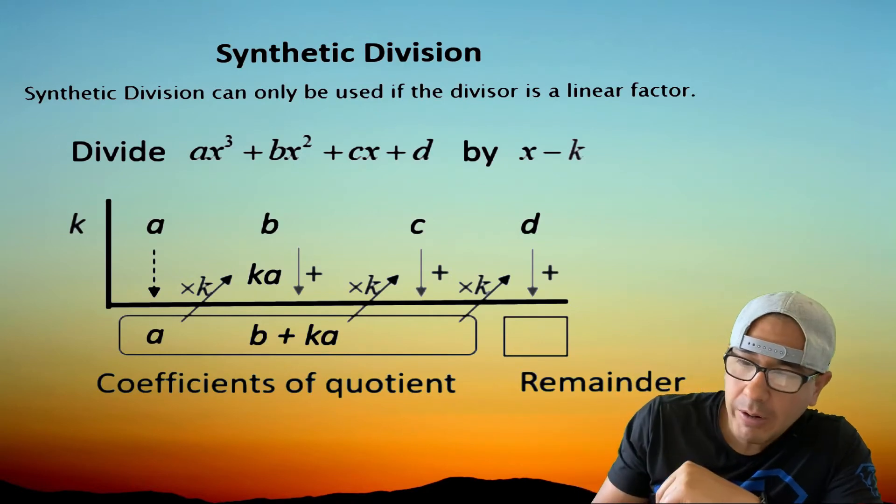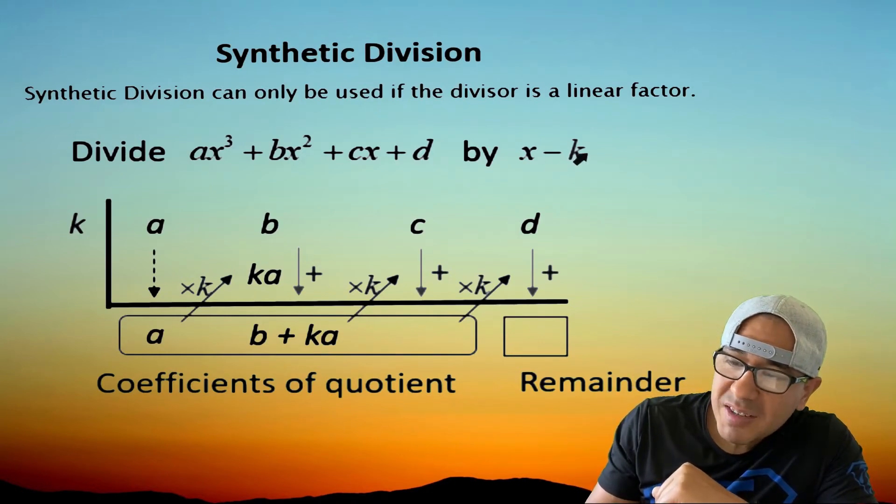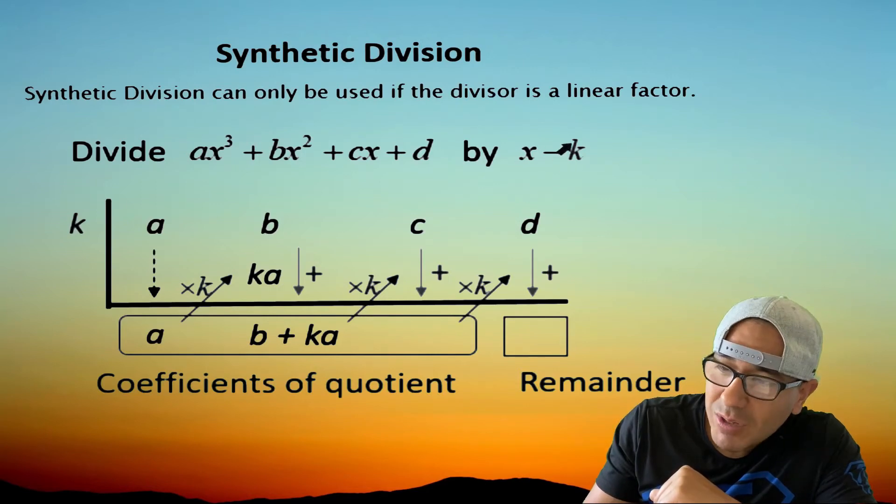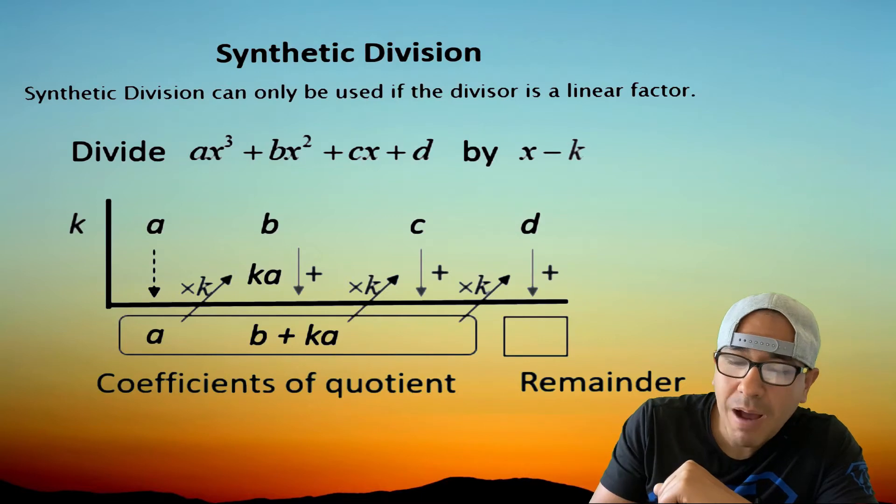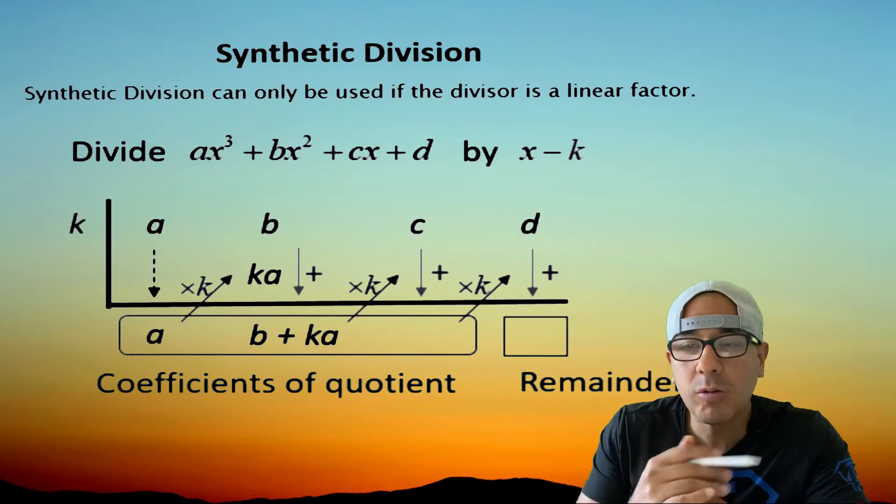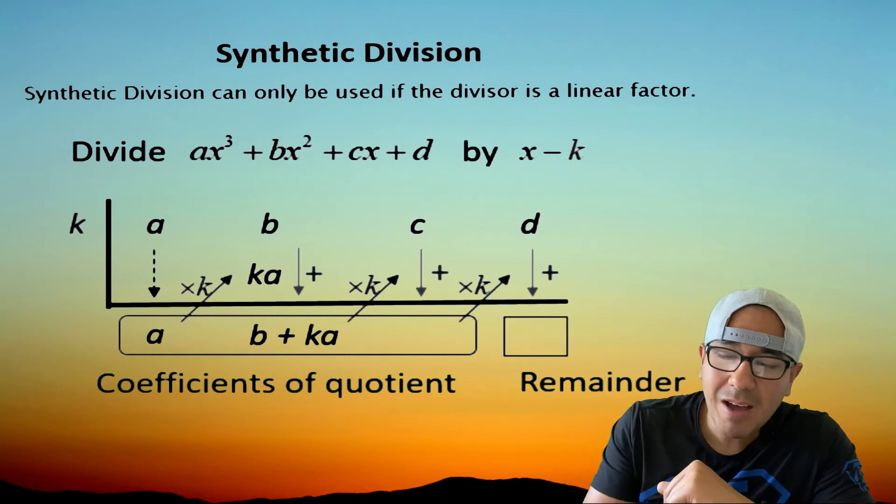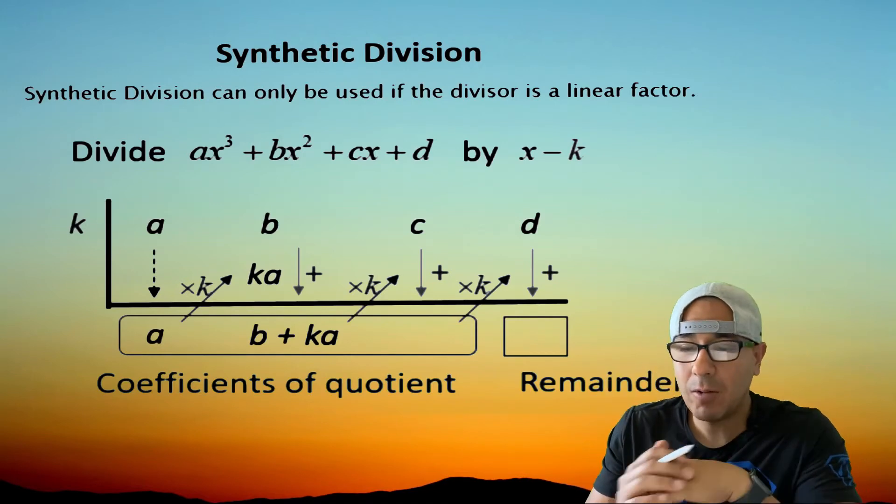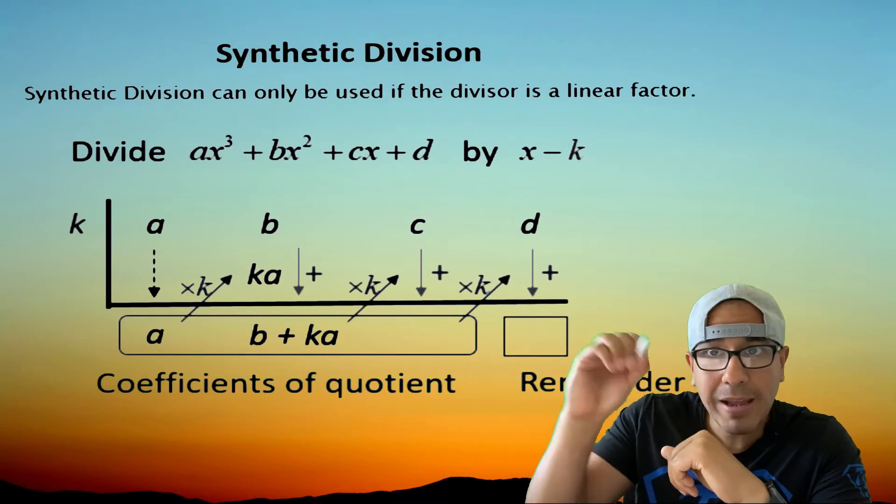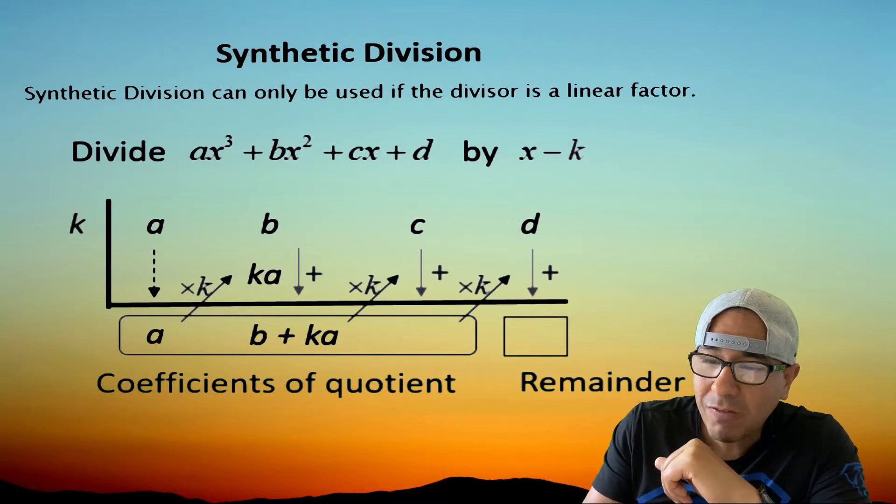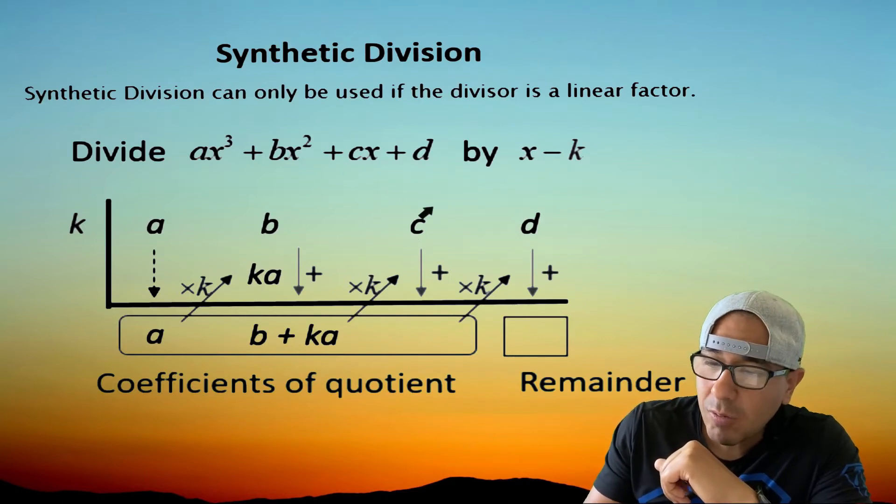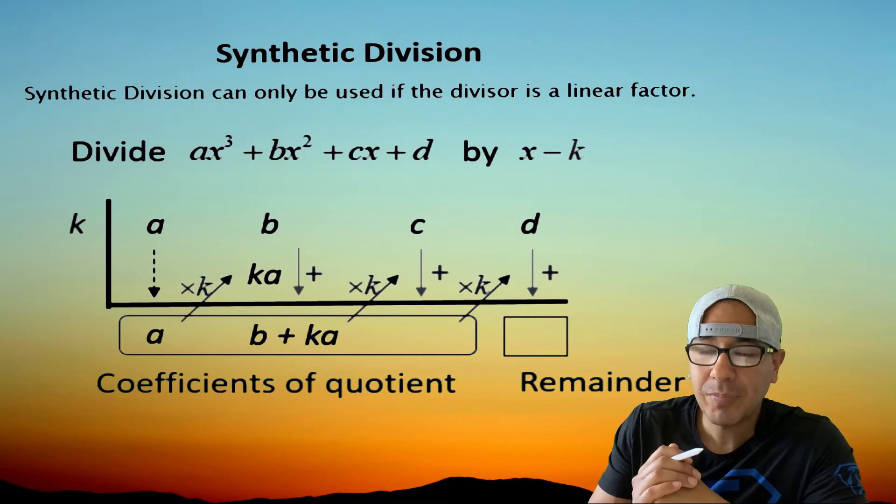Alright, copy. So when I say the opposite sign, notice we said we have x minus k. So we take the opposite of negative k, which is positive k, and that's what goes on the outside. That's what we're talking about when we say the opposite sign. Alright, all we're going to do is make sure this is in descending order, and then we grab the coefficients. So we grab these coefficients and these are the numbers that are going inside of our division here.